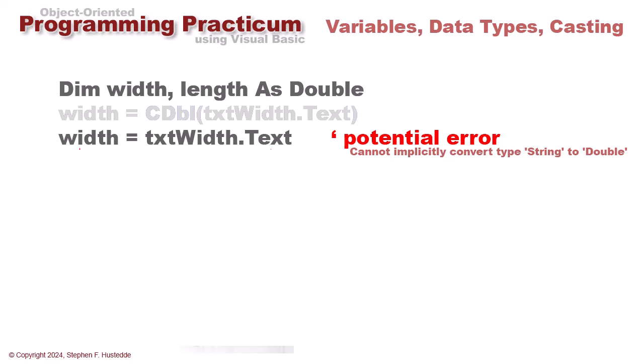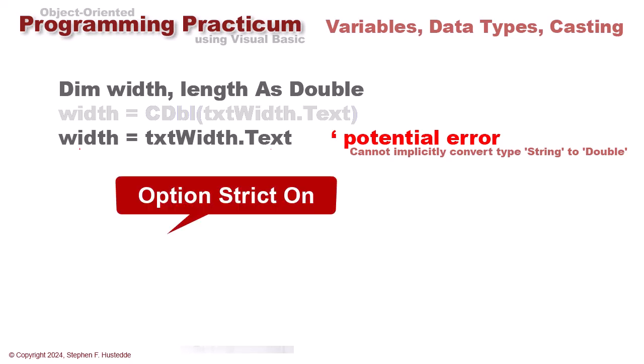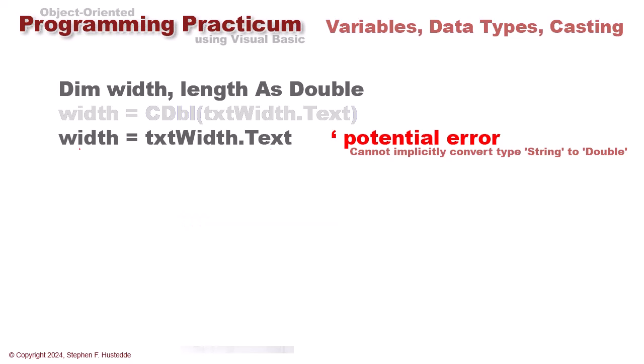In Visual Basic you can turn strict typing on by adding an option strict on at the top of your code. Why does that tend to create a potential error? Because width is a double data type and the text property is a string data type.